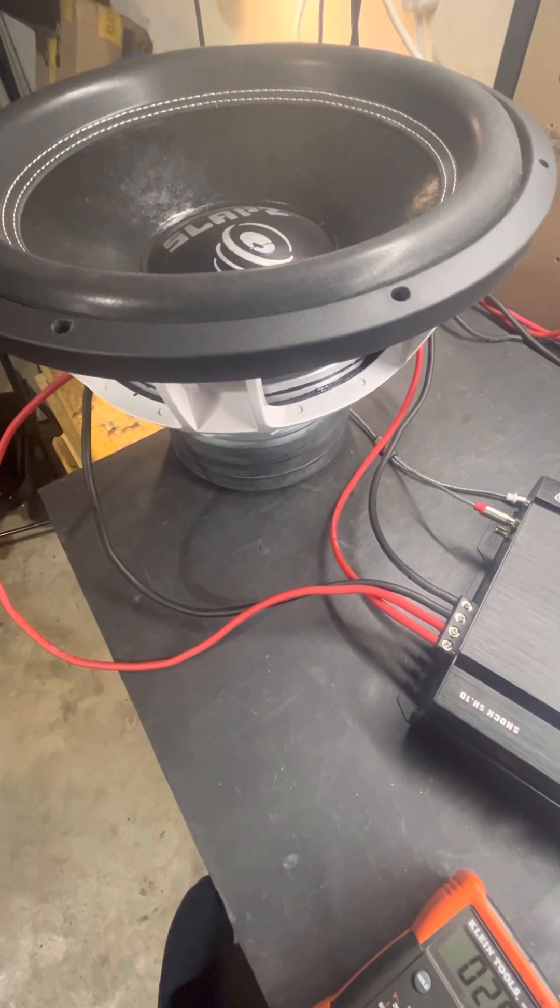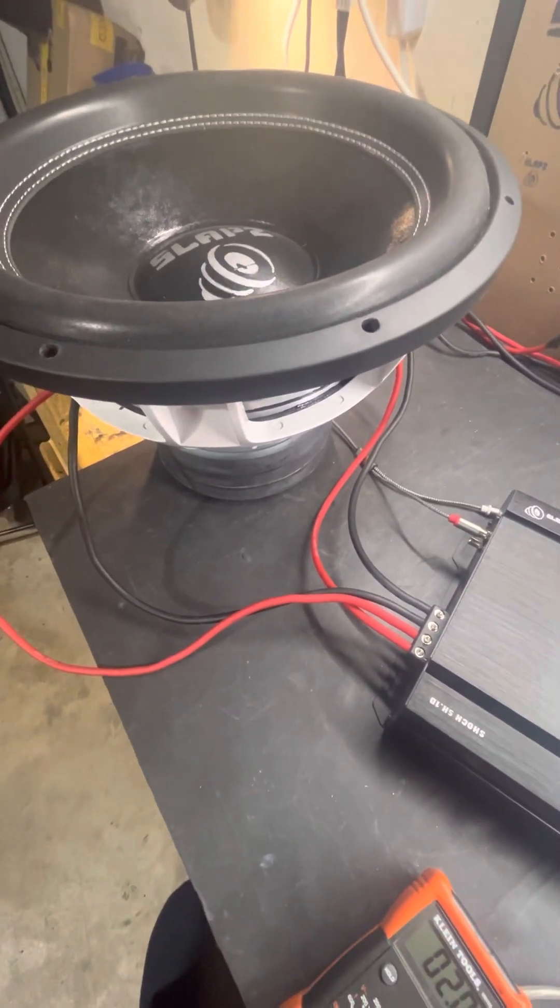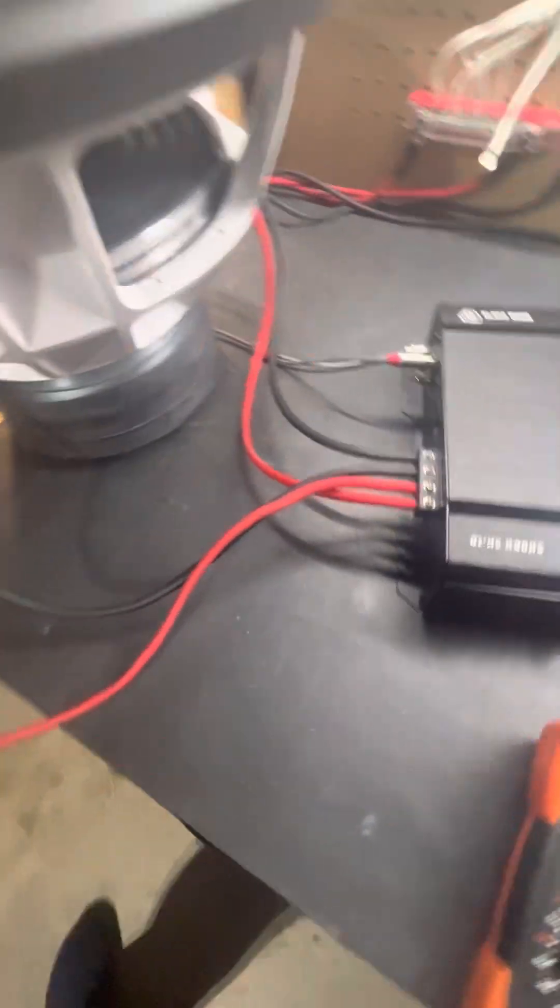In this case we have a single sub. These are one ohm amplifiers, so we'll pretend this is a dual two ohm voice coil sub which would bring it down to one ohm. Our amplifiers are internally bridged.